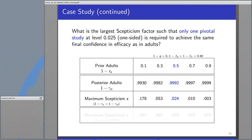Focusing on the middle column highlighted in blue: the prior belief of efficacy in adults is 0.5, resulting in a posterior in adults of 0.992. Under the assumption that for registration in children we need the same confidence as in adults, the skepticism S should not be higher than 0.024 to reach this targeted confidence with just a single study — really very low. In other words, one has to be 98% sure that full extrapolation from adults to children is possible. Furthermore, for different choices of prior belief in adults, the maximum skepticism considered acceptable varies considerably from 0.178 to 0.003.